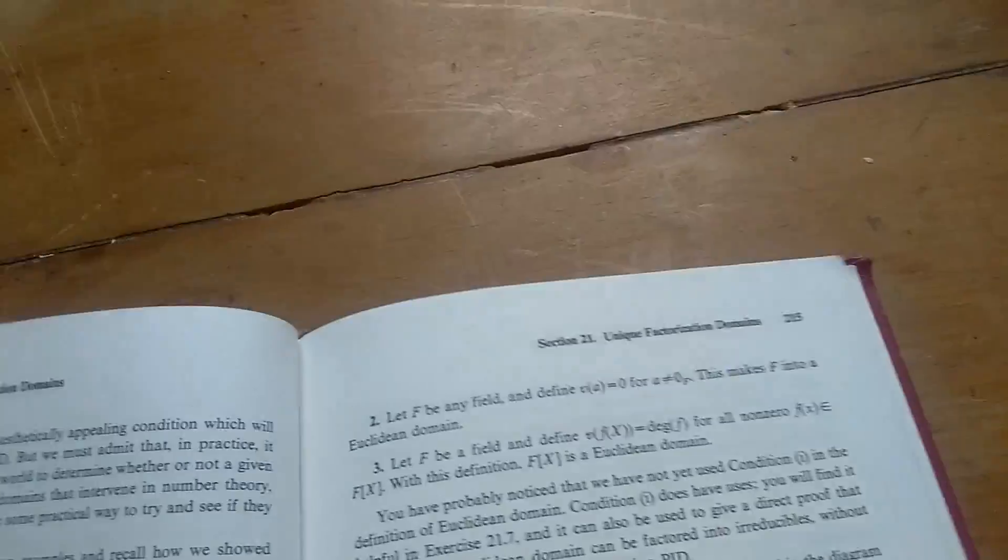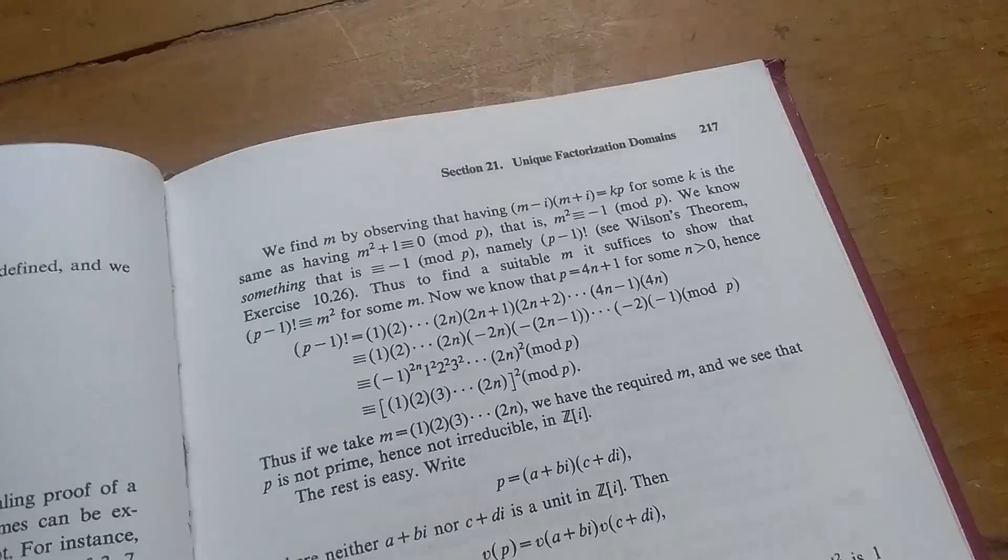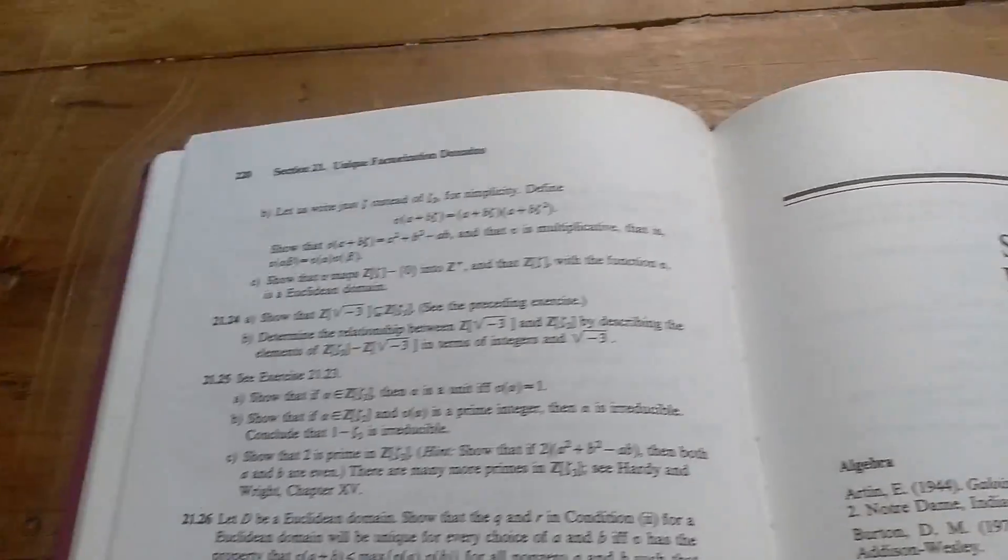But let's turn the page. So we have some more stuff here. He talks about a Euclidean domain. Okay, and then that's it, right? That's the last section. There's nothing else. Suggestions for further reading is how it ends.